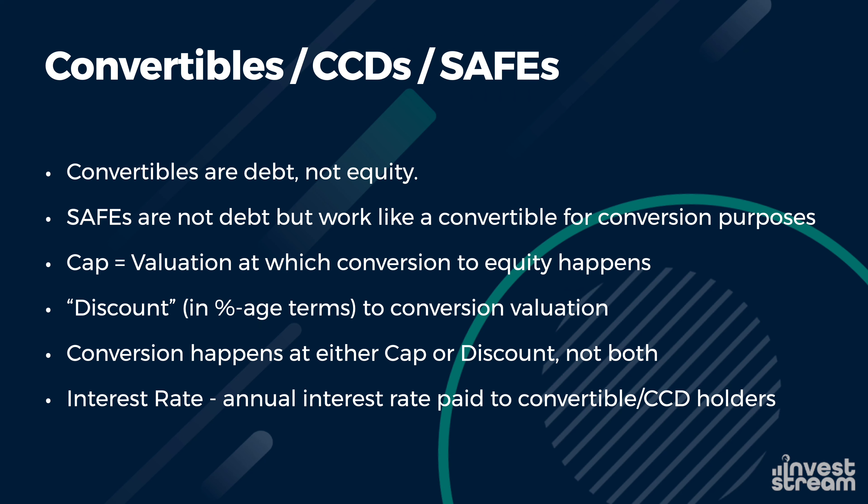There is a slight variation called the discount — in percentage terms, it's a discount to the conversion valuation. Investors who invest in a convertible note or SAFE will convert at either the cap or the discount, whichever is more in favor of the investor. It doesn't happen at both — you either convert at the five million dollar cap or at a twenty percent discount to the subsequent round. The interest rate is the annual interest paid on a convertible or CCD, and it's typically rolled up into the number of shares the investor will eventually receive.